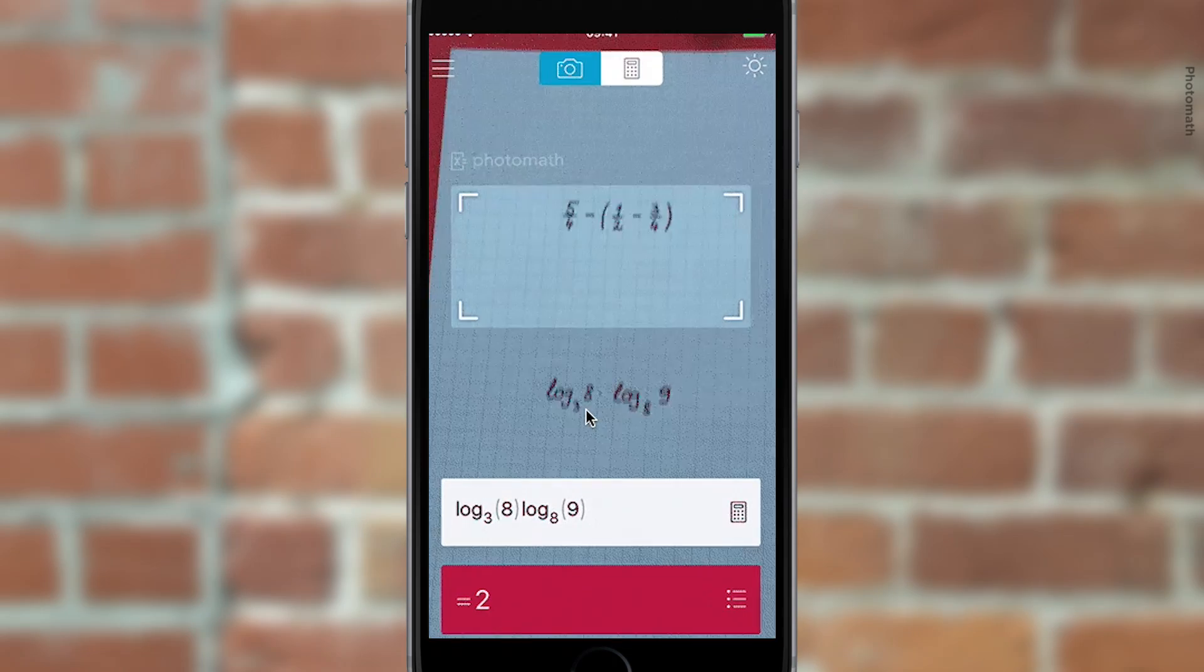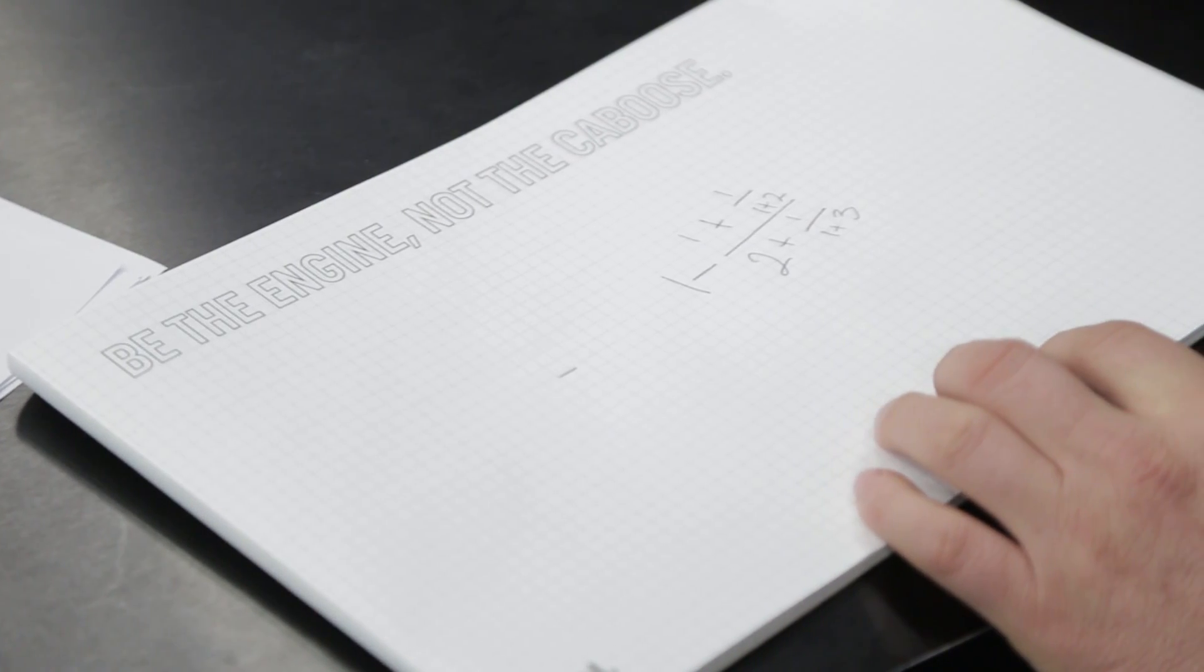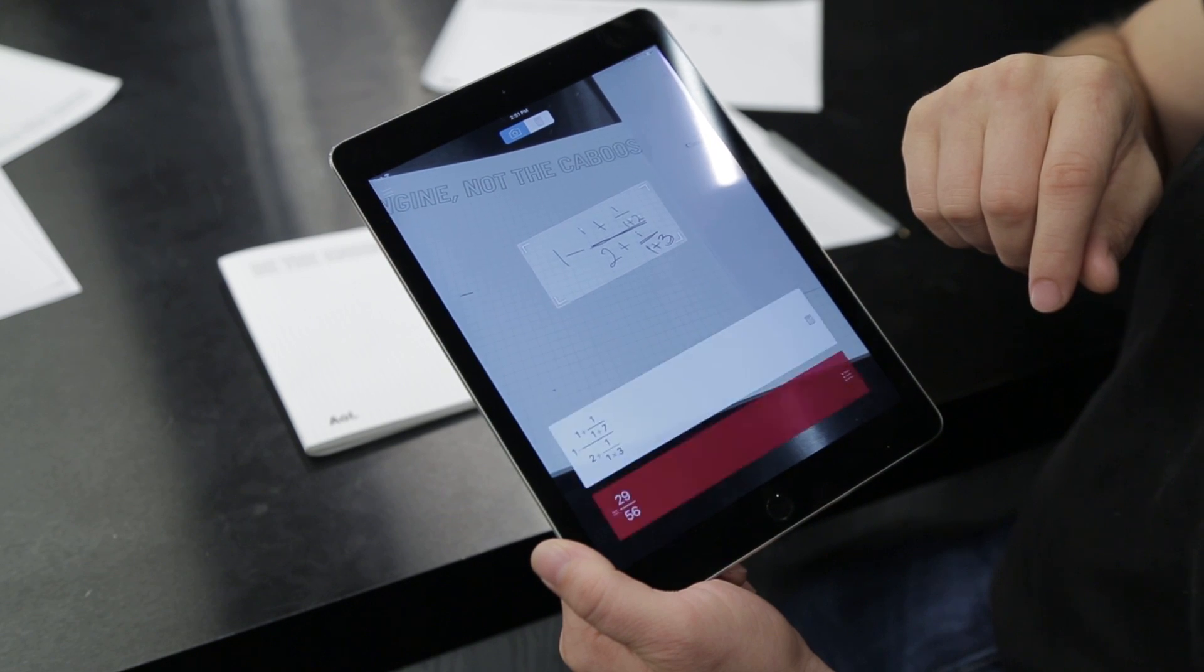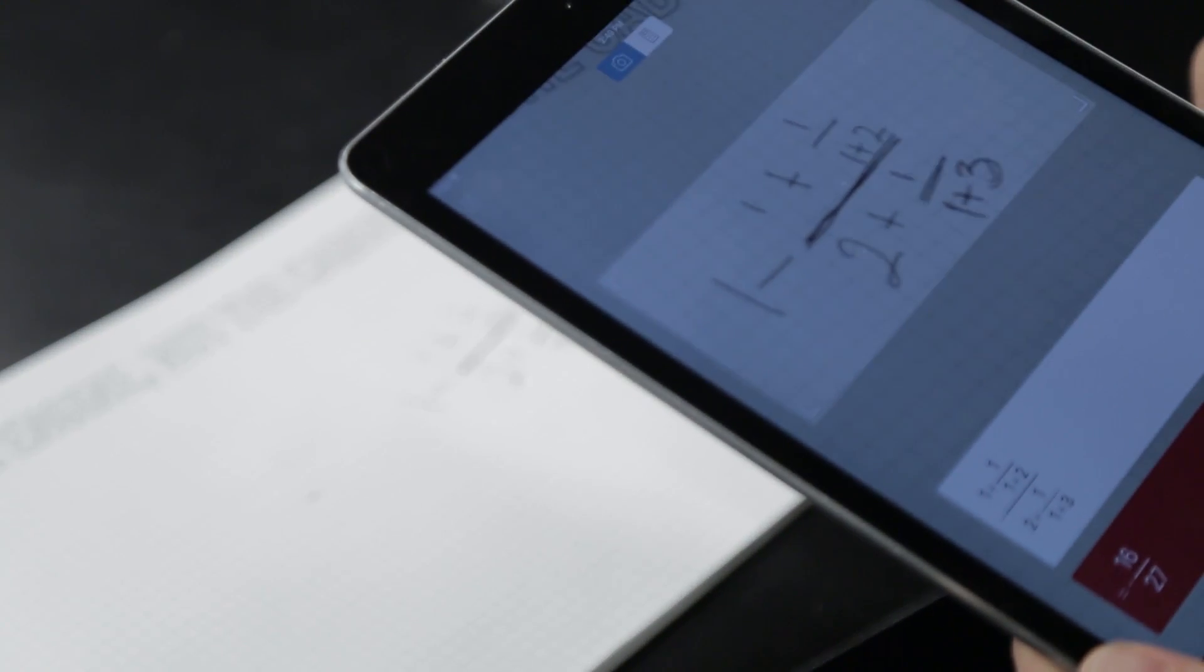We experimented with several people's handwriting, and Photomath picked it right up. The only problem I came across was with division bars. Photomath had difficulty delineating the order of operations. This was simply remedied by emboldening the lines.